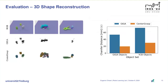We additionally evaluate the 3D shape reconstruction capabilities of both methods by evaluating the chamfer distance between the ground truth and the predicted object surfaces. We can see on the left a qualitative comparison where the object-centric nature of CenterGrasp allows us to distinguish between different objects. On the other hand, GIGA operates at the scene level and cannot distinguish between object instances. On the right, we show the numerical results of our evaluation, which demonstrate that CenterGrasp achieves better shape reconstruction compared to the baseline.